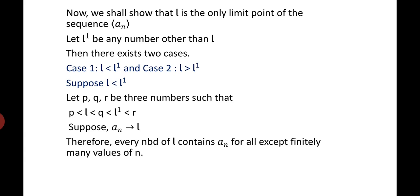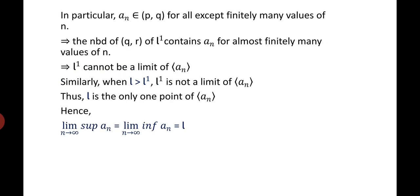Therefore every neighborhood of l will contain a_n for all except finitely many values of n. In particular, let a_n belong to (p, q) for all except finitely many values of n. This implies the neighborhood (q, r) of l' contains a_n for only finitely many values of n. This implies l' cannot be a limit point of a_n. Similarly, we can show that if l > l', then l' is not a limit point of a_n. Therefore l is the only limit point of sequence a_n.